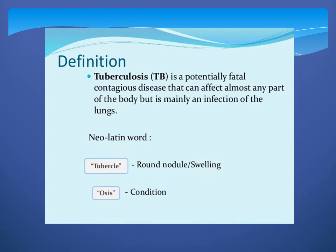You have to know the definition of tuberculosis. Tuberculosis is one of the contagious diseases that affects most or any part of the body. The meaning of tuberculosis: 'tubercle' means round nodule or swelling, and 'osis' means condition.